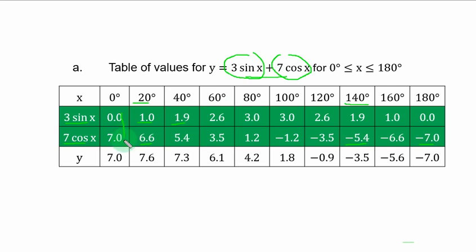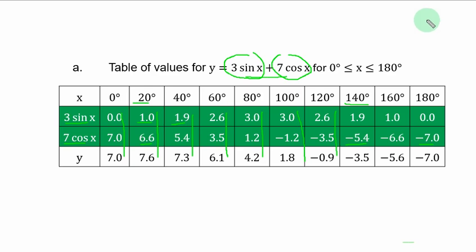Adding the two terms together: at s=0°, you have 7.0. Adding the next values, you have 7.6, then 7.3, then 6.1, then 4.2, then 1.8, then minus 0.9, and so on.